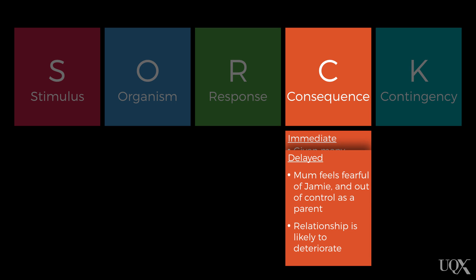Delayed consequences do, however, influence contextual variables that may be indirectly related to the recurrence of the behavior. In our example, possible delayed consequences include mum feeling out of control and ineffective as a parent, mum feeling fearful of Jamie, and a significant deterioration in the relationship between Jamie and his mum.